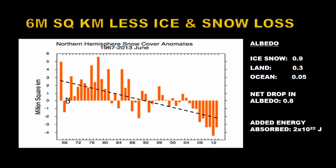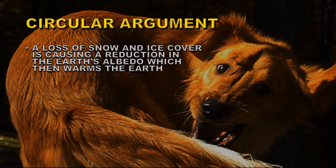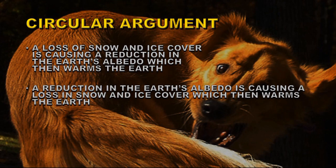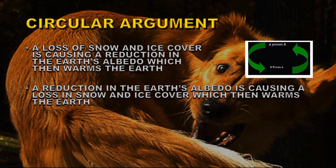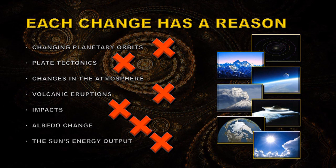If you use albedo as the cause for global warming, you unfortunately get yourself into a circular argument. It goes like this: a loss of snow and ice cover is causing a reduction in the earth's albedo which then warms the earth. Or a reduction in the earth's albedo is causing a loss of snow and ice cover which then warms the earth. So these two turn out to be A proves B and B proves A, which is not a viable solution to our problem. Remember from our first principle, any effect must have a cause. So what's causing the earth to warm? If it's albedo, something must be changing to cause albedo to change. So a much better statement is: a warming of the earth is causing a loss of some ice which further warms the planet because of the reduced albedo. So albedo here is actually acting as an amplifier of what other changes are causing. So now we're able to eliminate albedo change as the primary cause of global warming.